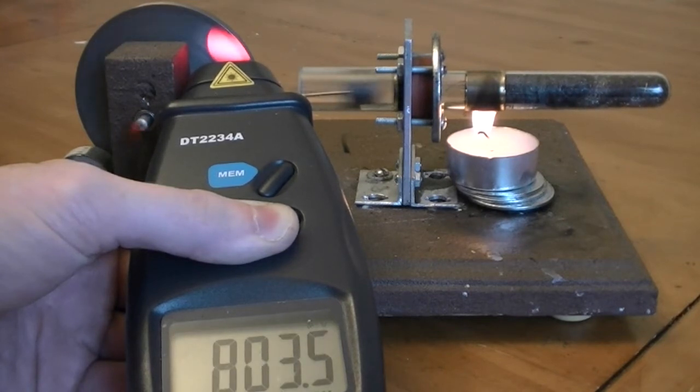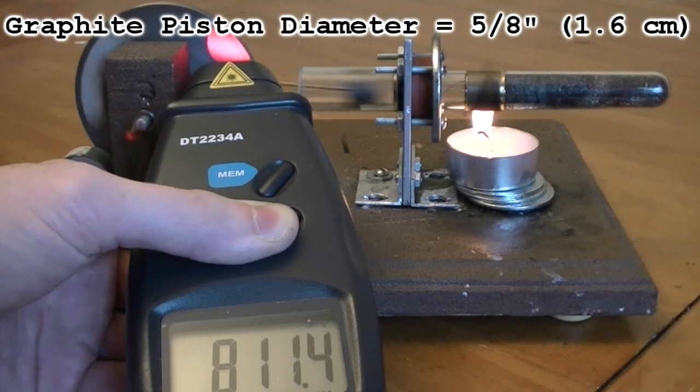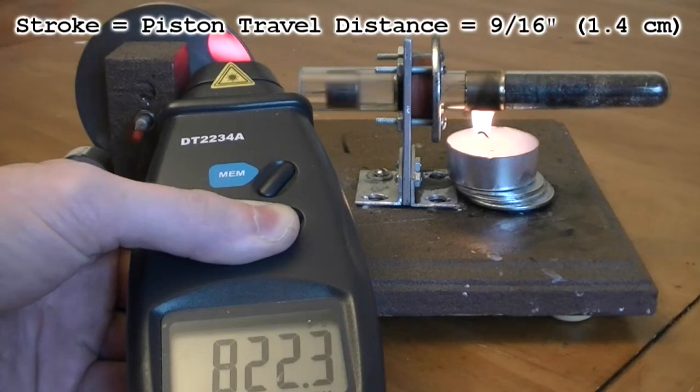The piston in this engine is made of graphite and has a diameter of 5/8 of an inch. The stroke of the piston is currently set at 9/16.